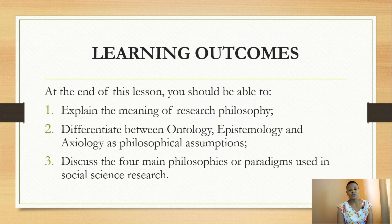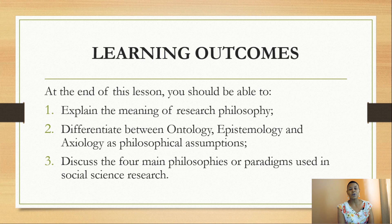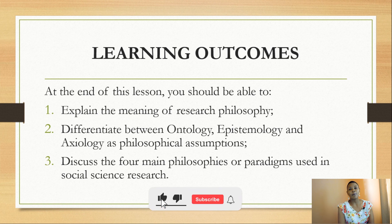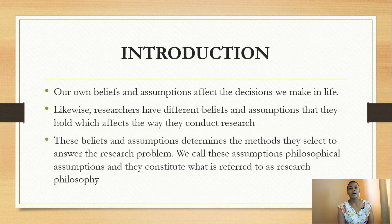Let us first look at the learning outcomes of this lesson. At the end of this lesson, you should be able to explain the meaning of research philosophy, differentiate between ontology, epistemology, and axiology as philosophical assumptions, and discuss the four main philosophies or paradigms applicable in social science research.